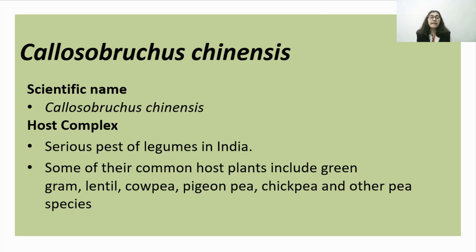The scientific name of Pulse Beetle is Callosobrucus chinensis. It is a serious pest of legumes in India. Some of the common host plants include green gram, lentil, cowpea, pigeon pea, chickpea and other pea species.